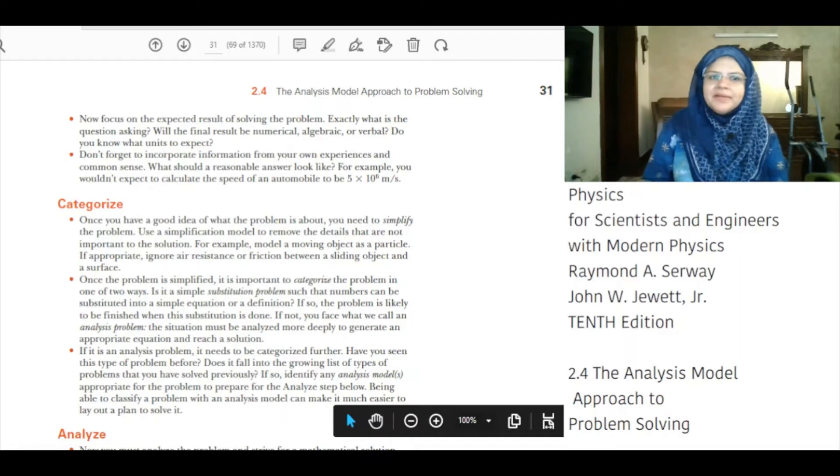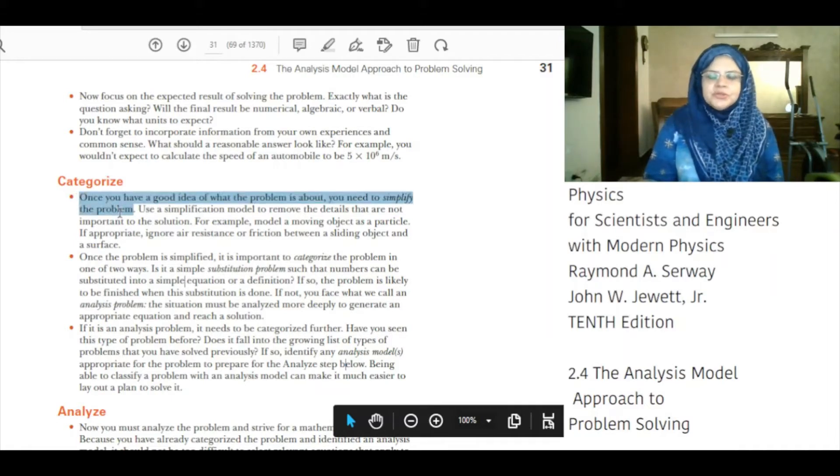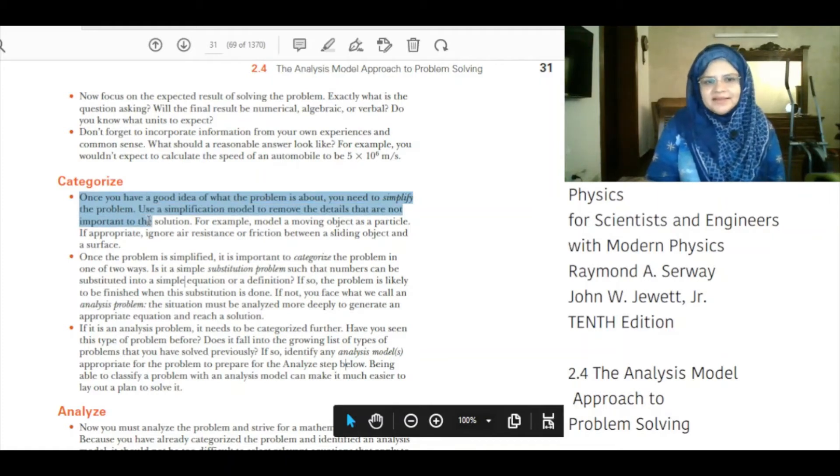After conceptualize, we will categorize. Once you have a good idea what the problem is about, you need to simplify the problem. Use a simplification model to remove the details that are not important to the solution. For example, model a moving object as a particle. If appropriate, ignore air resistance or friction between a sliding object and the surface.